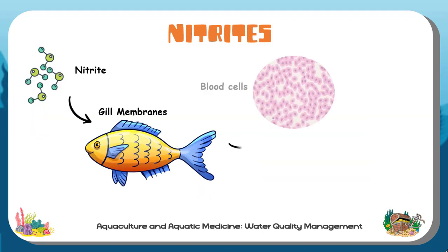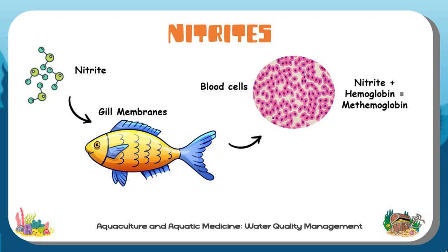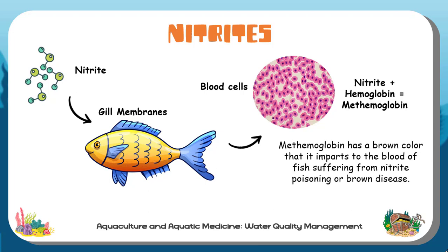Nitrite enters the blood of fish across the gill's membrane, where it combines with the oxygen-carrying portion of red blood cells, or hemoglobin, to form a compound called methemoglobin, which cannot carry oxygen. Methemoglobin has a brown color that imparts to the blood of fish suffering from nitrite poisoning.